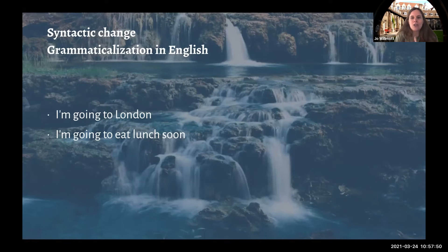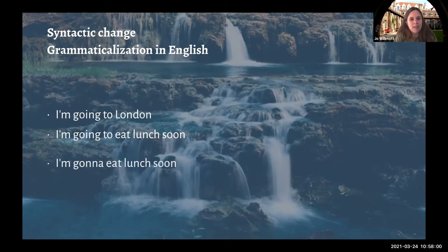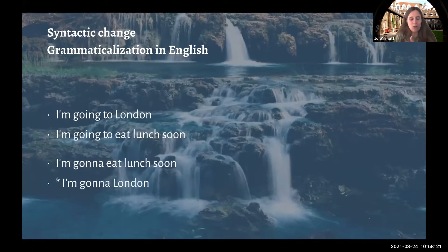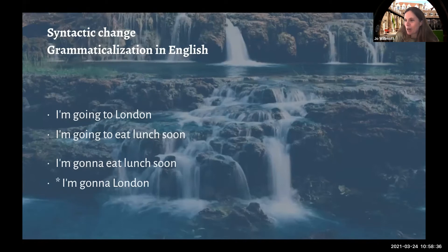We can see some differences between these two uses. In the future tense marker, we can have a change of pronunciation — typically a reduction. Even if we wouldn't write it, we do say 'I'm gonna eat lunch soon.' The original 'going to' has reduced to just two syllables: 'gonna.' We can't do that reduction when we're still using 'going to' in the original motion sense — 'I'm going to London.' We can't sensibly say 'I'm gonna London.' This isn't just a sound change — it's a change caused by the word becoming more of a grammatical word and then losing its phonetic size.